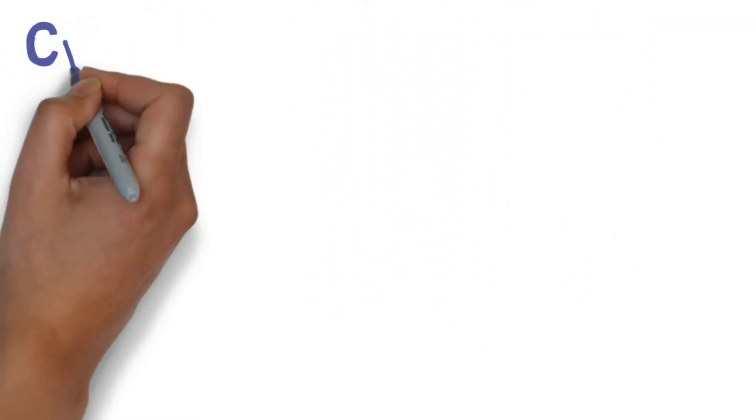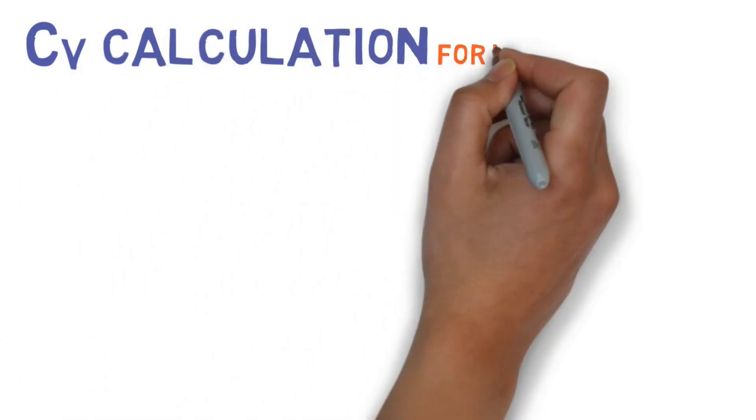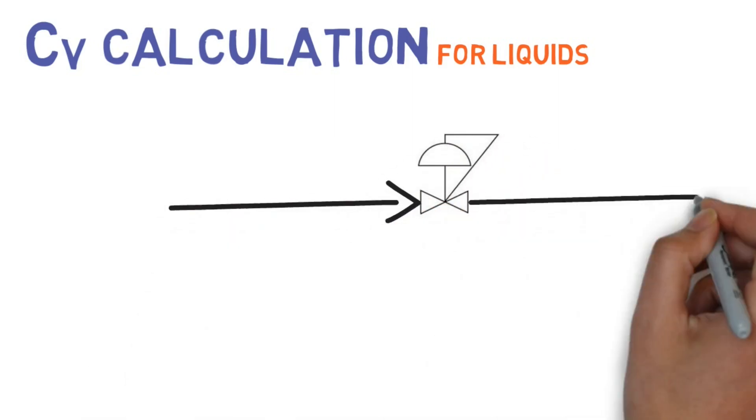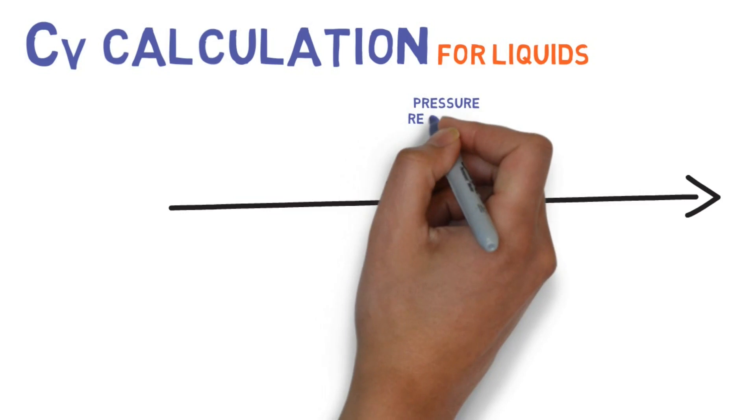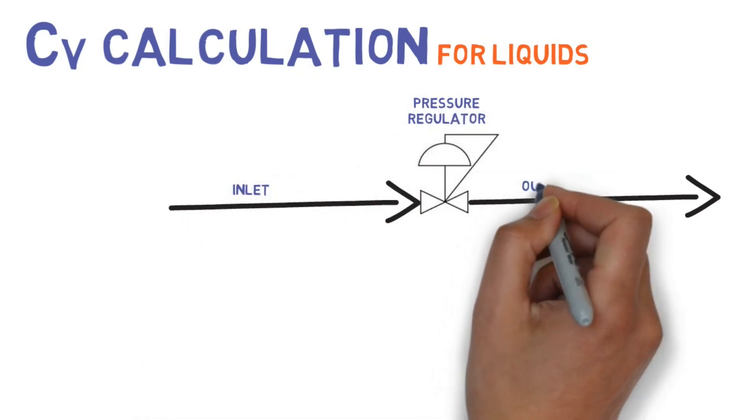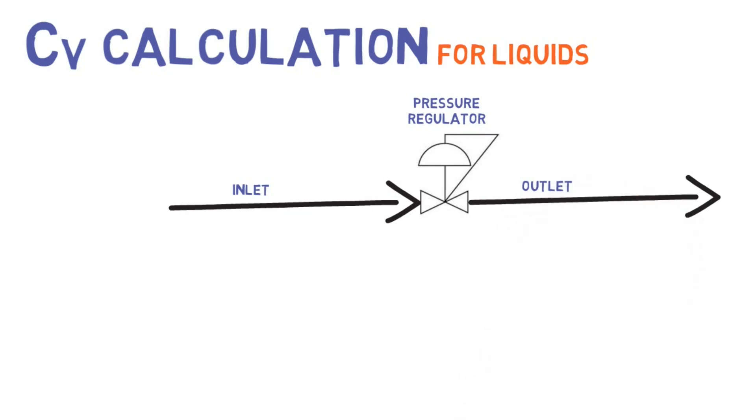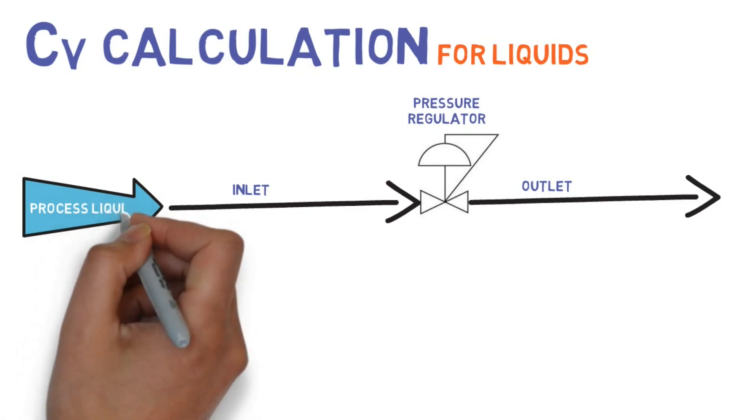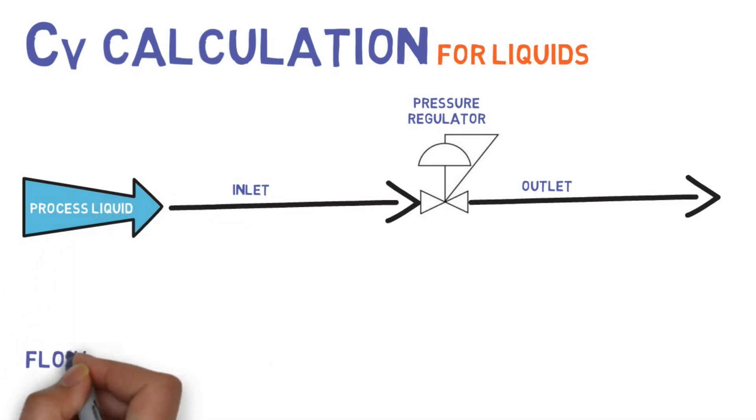Now we'll see the CV calculation for liquids. Pressure regulator, inlet of pressure regulator, outlet of pressure regulator. Process liquid flowing through pressure regulator. Formula for coefficient of liquids will be: